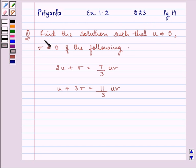The question says, find the solution such that u is not equal to 0, v is not equal to 0 of the following. The equation says, 2u plus v is equal to 7 by 3 uv and u plus 3v is equal to 11 by 3 uv.